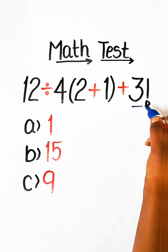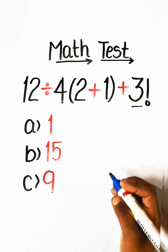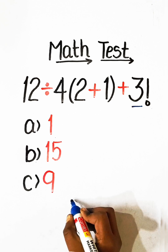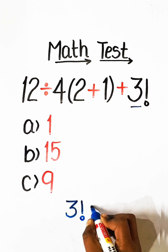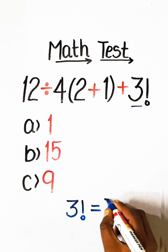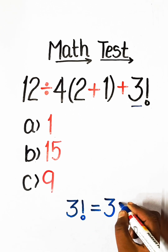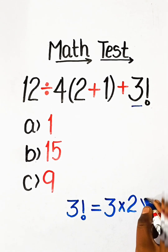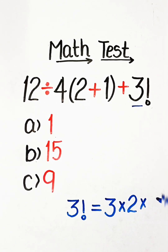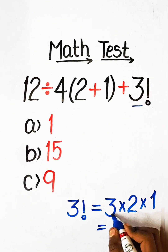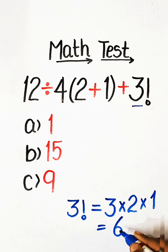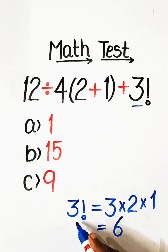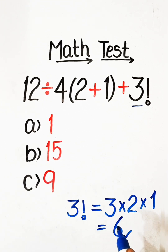First we have to know the value of 3 factorial. 3 factorial equals 3 multiply by 2 multiply by 1. 3 twos are 6, 6 ones are 6, so the value of 3 factorial equals 6.